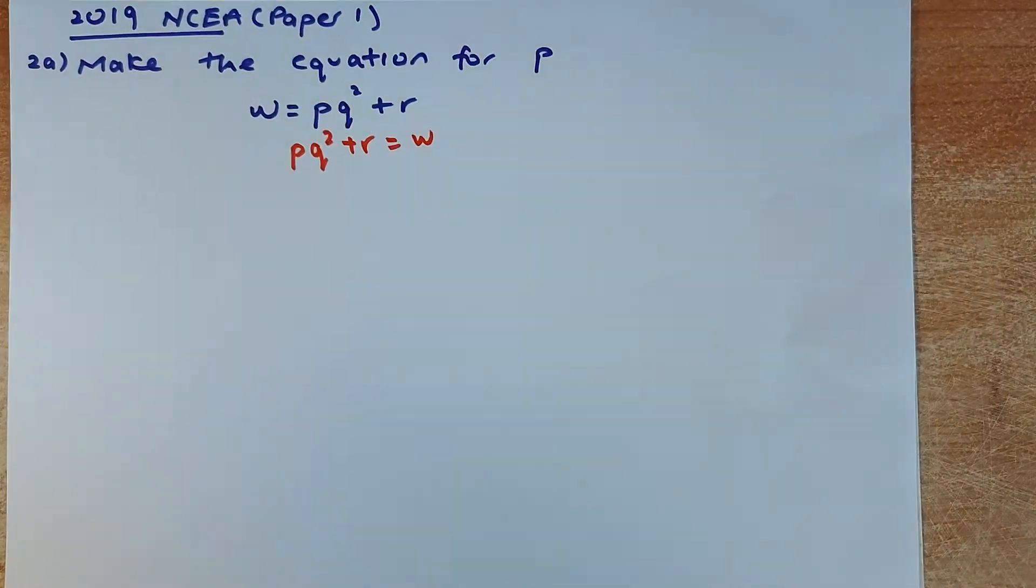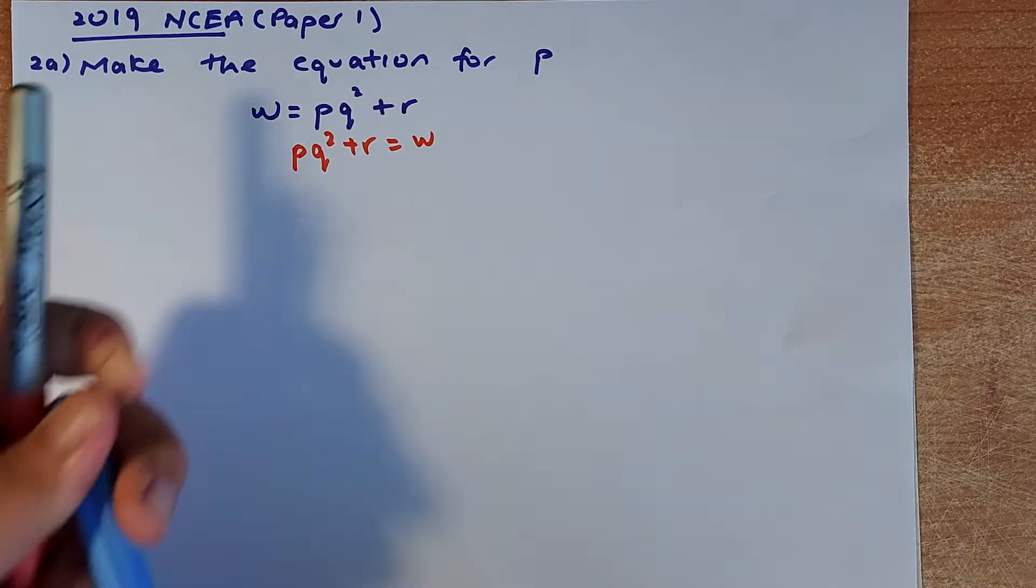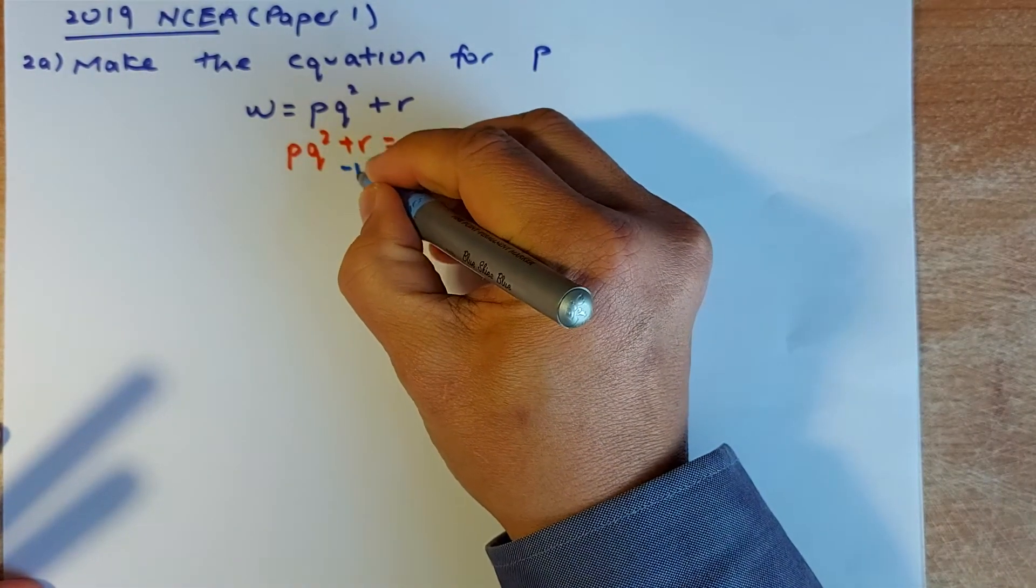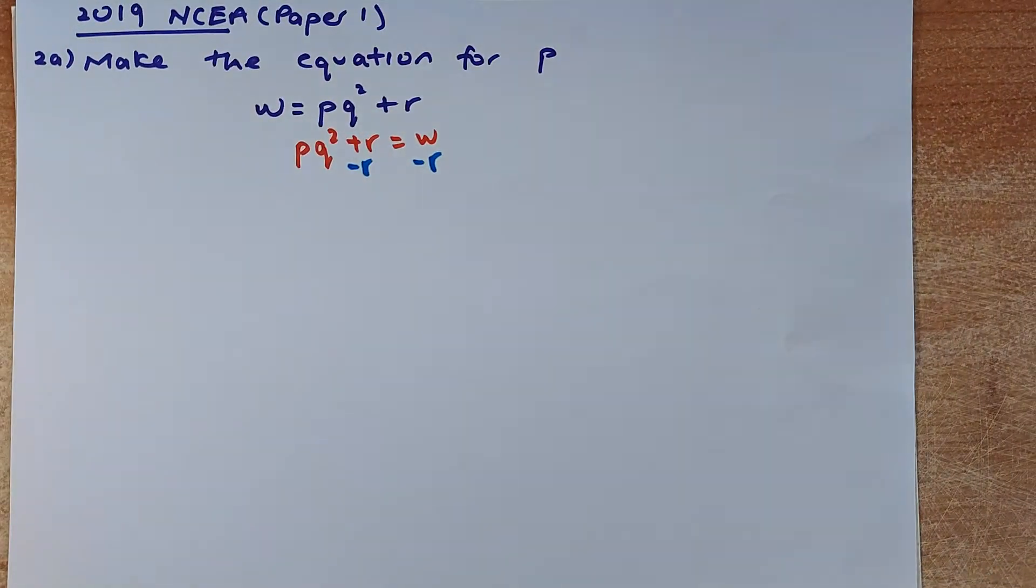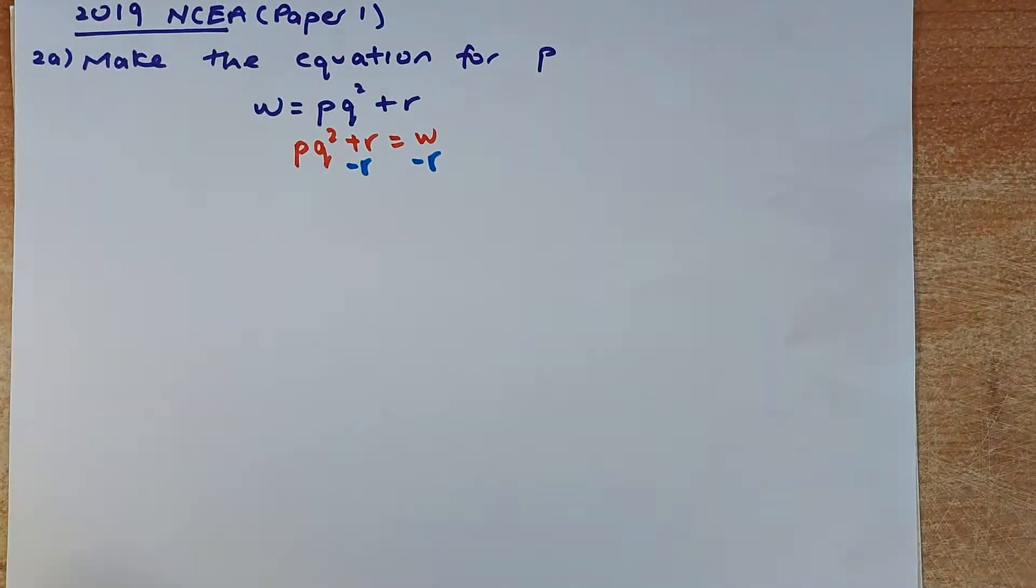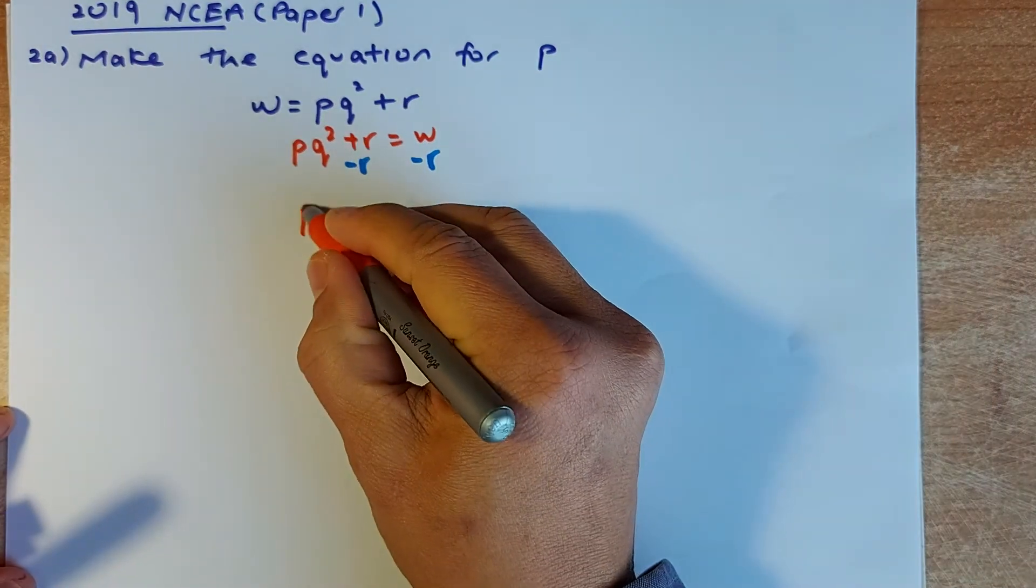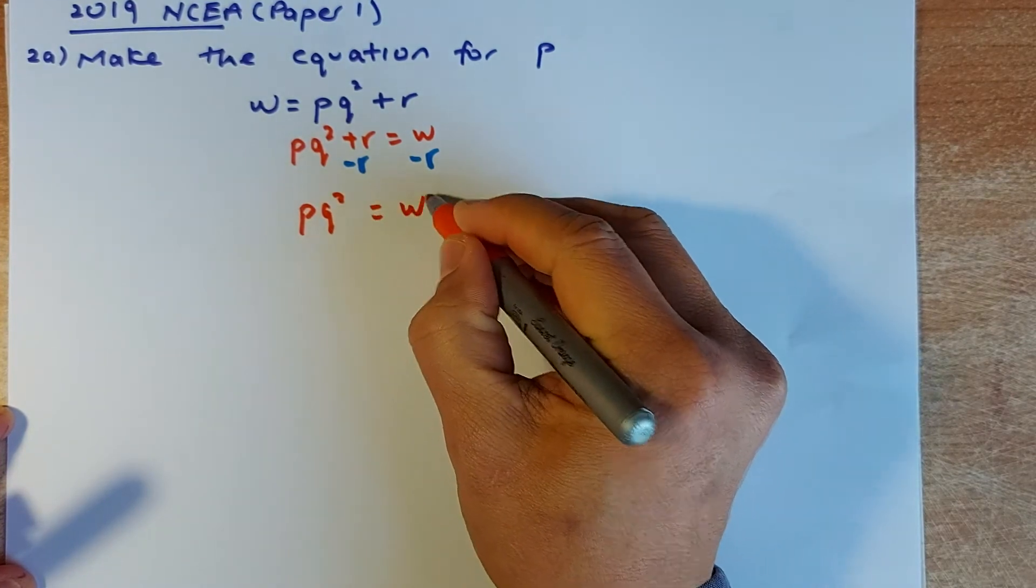Now, you are going to take the rest of the equation that is not P to the other side. So plus R, you do the reverse. You minus R on the left. You must do the same on the right. So when you do that, the R will cancel out. So what's left is you have PQ². This will cancel out, equals to W minus R.